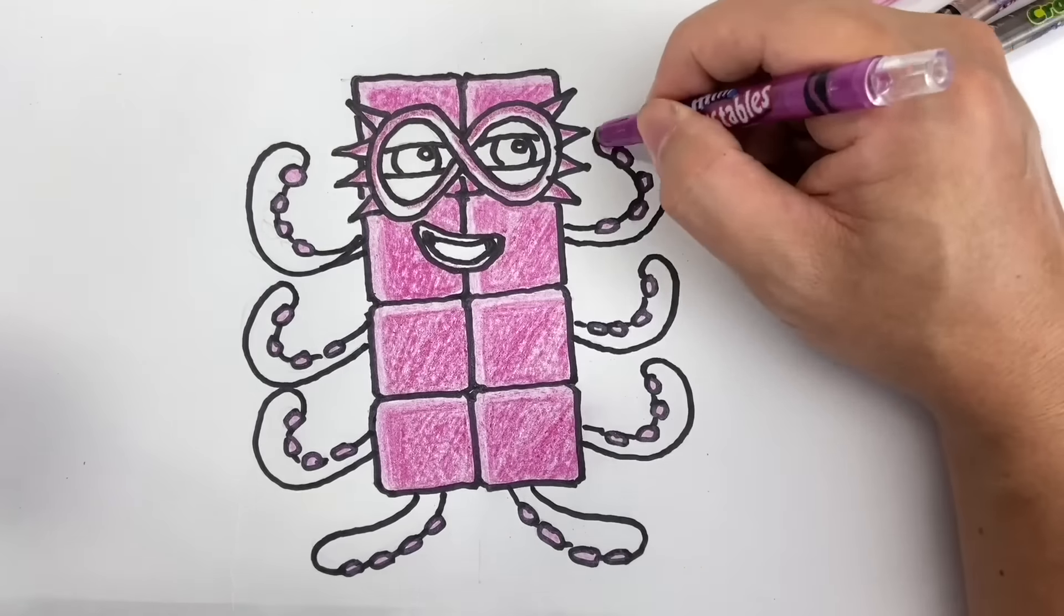Octoblock! Color! One, two, three, four, five, six, seven, eight! Color! After that, you can use the black crayon to color in the pupils of his eyes.